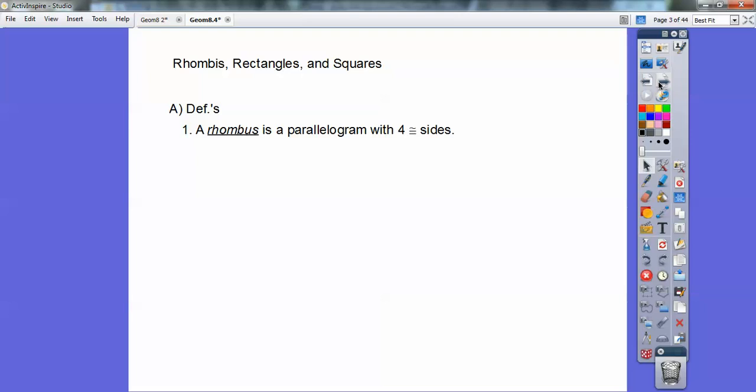Definitions. A rhombus is a parallelogram with four congruent sides. So you want to see the video on parallelograms first for this one to make any sense. Okay, so here's a rhombus you guys, four congruent sides right there. It's like a square being squished over. Okay, a square is a rhombus also.